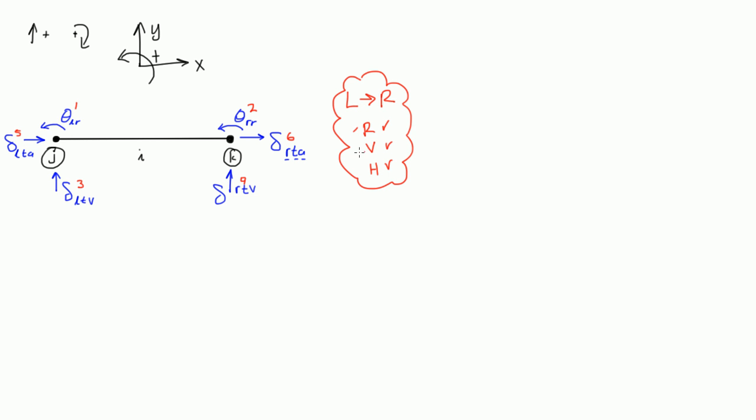That's how we label these degrees of freedom. We do left to right. We do rotations first, verticals next, and then finally horizontals.